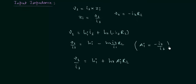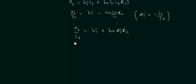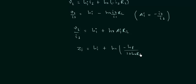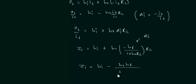We have already derived the expression of current gain Ai and I will substitute it into this equation. V1/I1 is equal to Zi, the input impedance. Then we have Hi plus Hr multiplied by the expression for current gain, which is minus Hf divided by the quantity (RL plus Ho). On simplifying the right hand side, we have Zi equal to Hi minus Hr·Hf divided by (1/RL plus Ho).